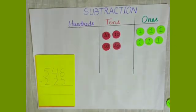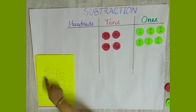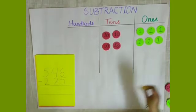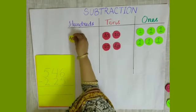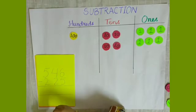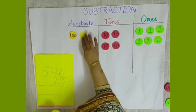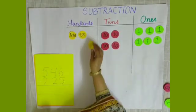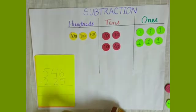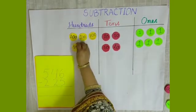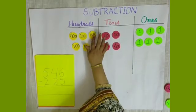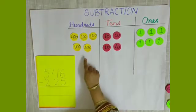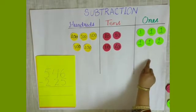And in the 100s column we have 5, so I will place 5 hundreds here: 1, 2, 3, 4 and 5. Now we have 546 represented.